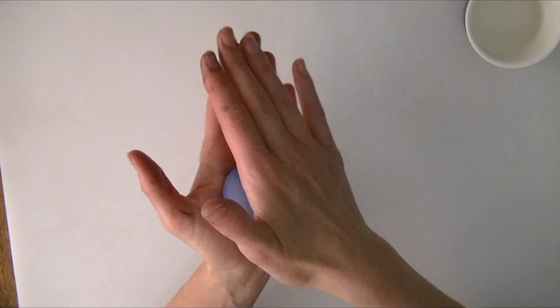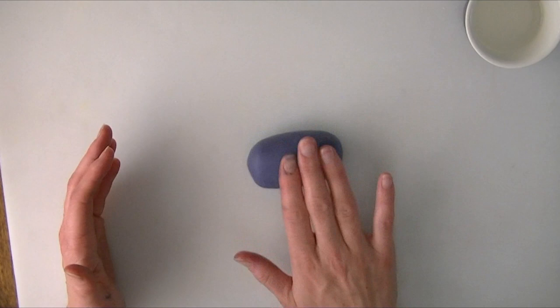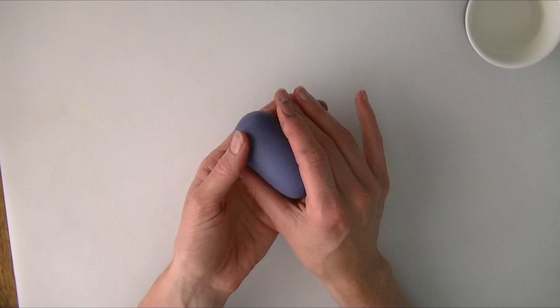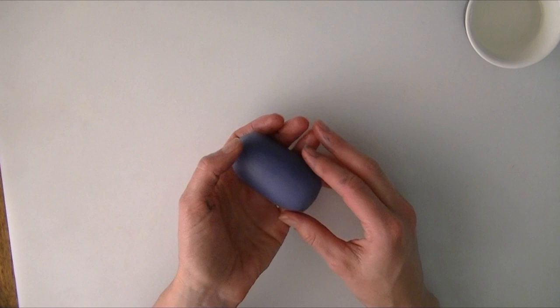We're going to start by rolling into a little bit of a sausage shape. I do apologize, you can see where I've just dyed the purple. It doesn't have to be an exact height because they are all different heights.